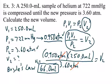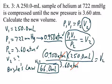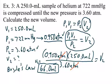This confirms Boyle's Law — pressure and volume are inversely proportional. The pressure went from 0.950 ATMs up to 3.60 ATMs. The problem even tells you the gas is being compressed, so the volume must go down. It went from 250 mL to 66 mL. The math confirms the theory.